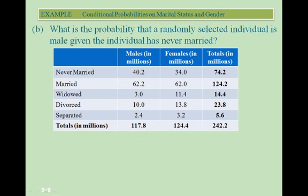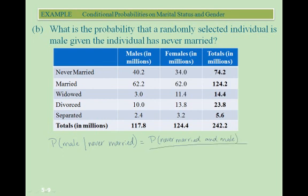Now we want to look at the probability that a randomly selected individual is male given the individual has never married. We are changing the order here. The probability that the individual is male given that the individual has never married. So now we're going to look at the probability of never married and male, divided by the probability that they were never married.